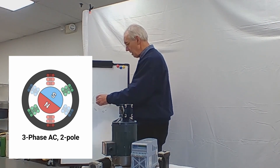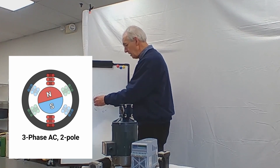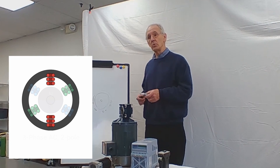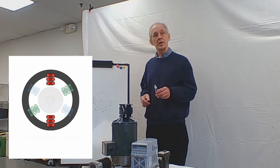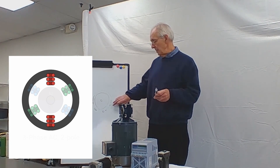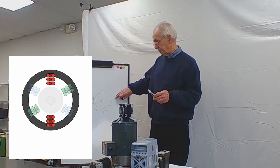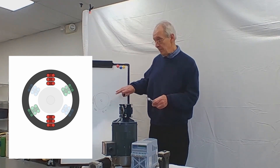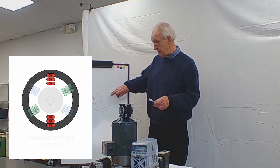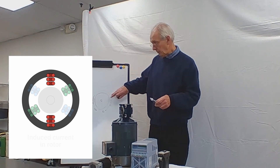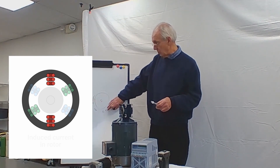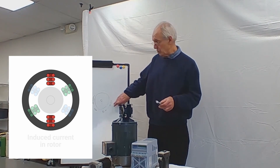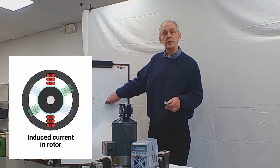The rotor has no magnets in it. It's made up of metal laminations. The motor would not turn if you simply turned the power on. What happens is the electromagnet coils around the motor actually induce magnetism into the metal.